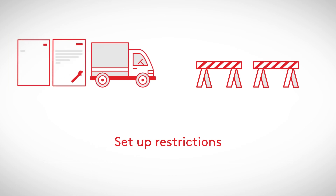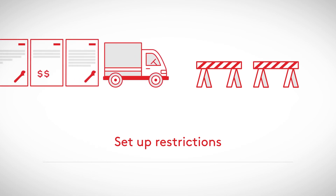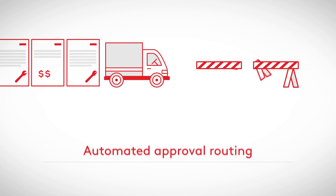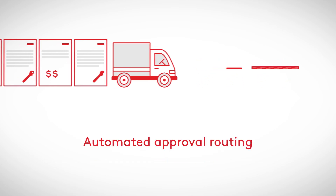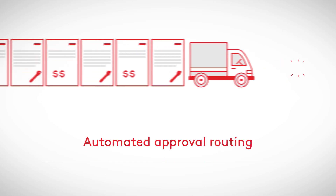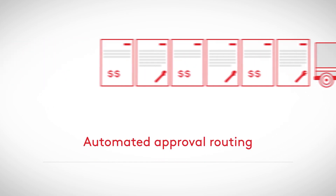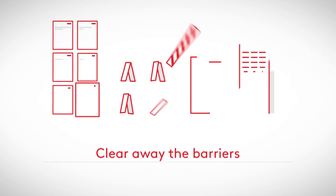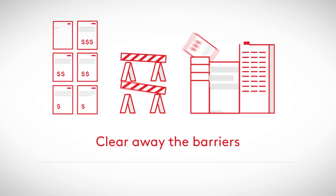If you run into a problem with a vendor, you can set up restrictions that will prevent any new orders, invoices, or payments from being processed until the issue is resolved. Once the vendor is back in compliance, automated approval routing makes it easy to review orders, invoices, and payments quickly and efficiently.